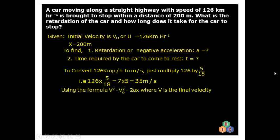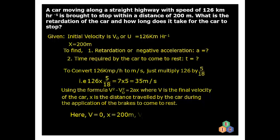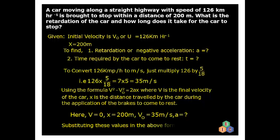Now let's use the formula V² − V₀² = 2ax to find the retardation, where V is the final velocity of the car and x is the distance traveled during braking to come to rest. Here V is equal to zero because the car is coming to rest, so its final velocity is zero. The initial velocity is 35 meters per second, and the distance traveled is 200 meters. We need to find the acceleration.